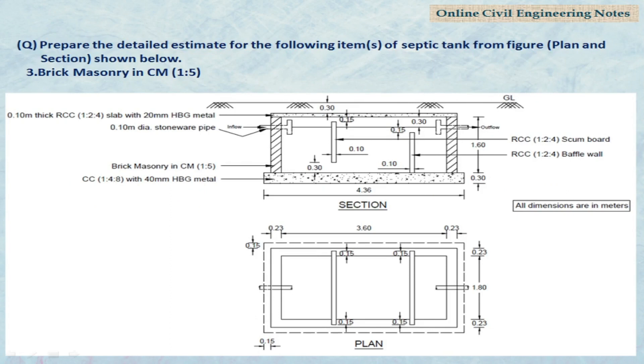Prepare the detailed estimate for the following items of septic tank from the figure plan and section shown below. The item is brick masonry in CM 1 is to 5.